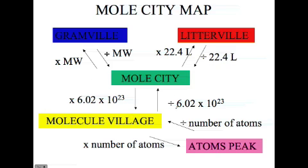Wherever you are on the map, wherever you want to go, you need to know where you're starting and where you're going to finish. So if I start at atoms and I want to go to grams, I would simply divide by the number of atoms, divide by Avogadro's number, and multiply times the molecular weight, and my answer would be given in grams. Let's take a look at the problem.